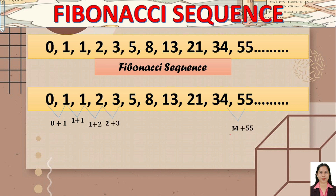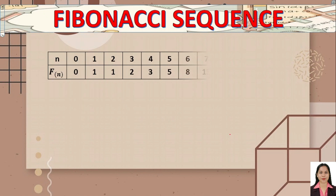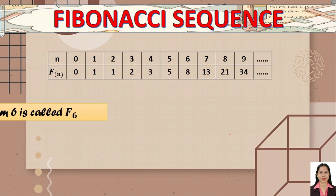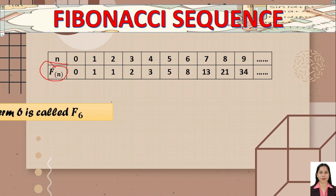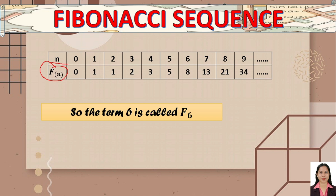For example, 34 plus 55 equals 89. In the table, n stands for the number of terms and f-sub-n is the Fibonacci number. For instance, term 6 is called f-sub-6, and f-sub-6 is equal to 8.